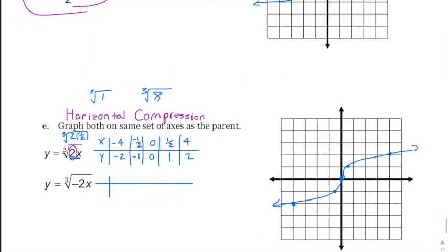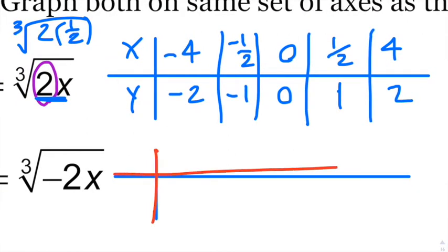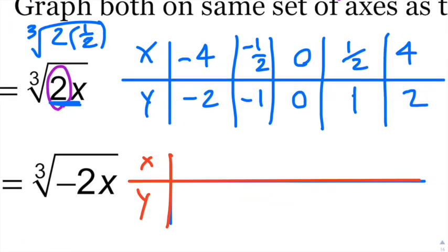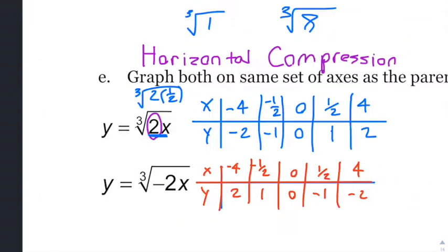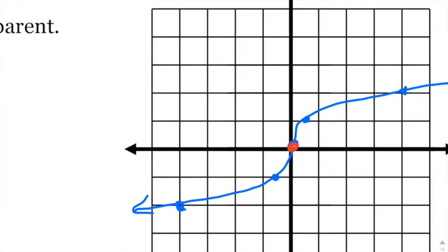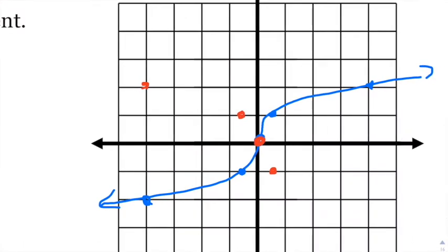For the next table — the reflected version — start with zero comma zero. Plug in x equals one-half: because of the negative inside, you get the cube root of negative one, which is negative one. For x equals negative one-half: positive one. For x equals negative four: positive two. Then plot all those points to get the reflected horizontal compression graph.